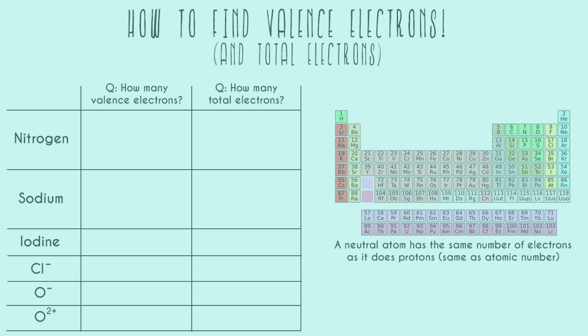To find the total electrons, all we have to do is find nitrogen on the periodic table. We can see that nitrogen is number seven, so this nitrogen has a total of seven electrons.